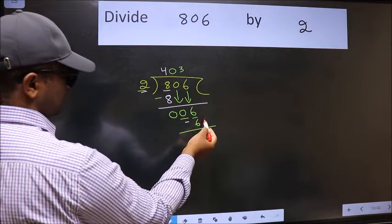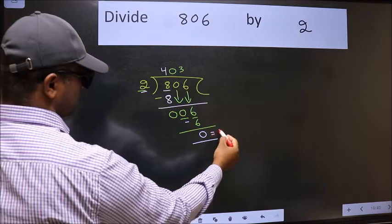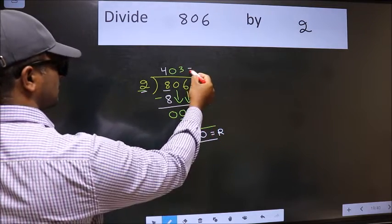No more numbers to bring it down. So we stop here. This is our remainder and this is our quotient.